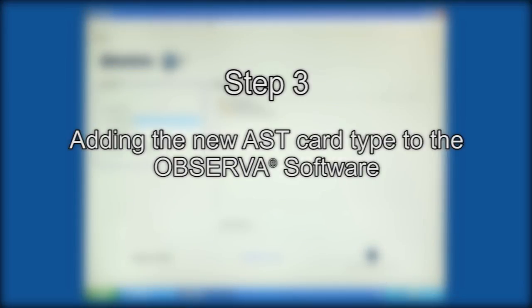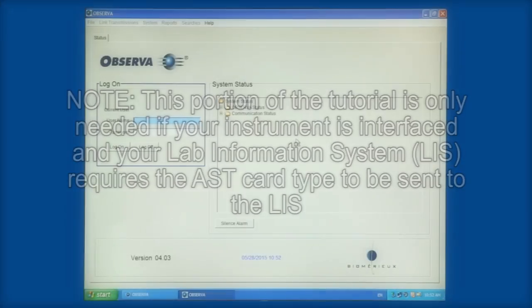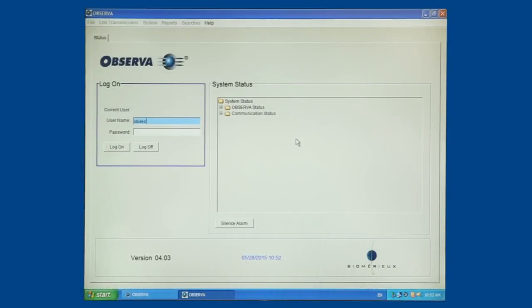Step 3: Adding the new AST card type to the Observa software. Note: this portion of the tutorial is only needed if your instrument is interfaced and your lab information system requires the AST card type to be sent to the LIS. Log in to Observa using a username and password with administrator access.